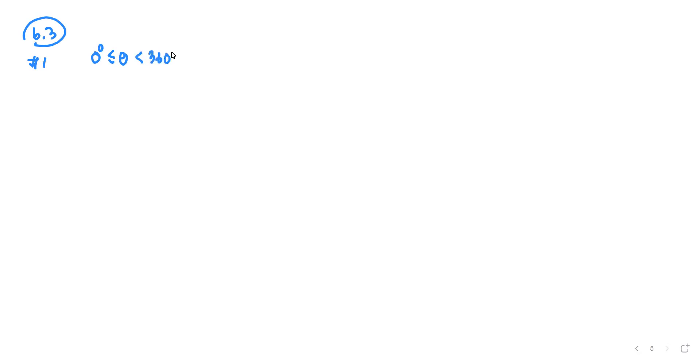Homework section 6.3, number one. We are going to find solutions for angle theta between 0 degrees and 360 degrees where the equation is sin(2θ) = √3/2. We're going to start with the general solution.